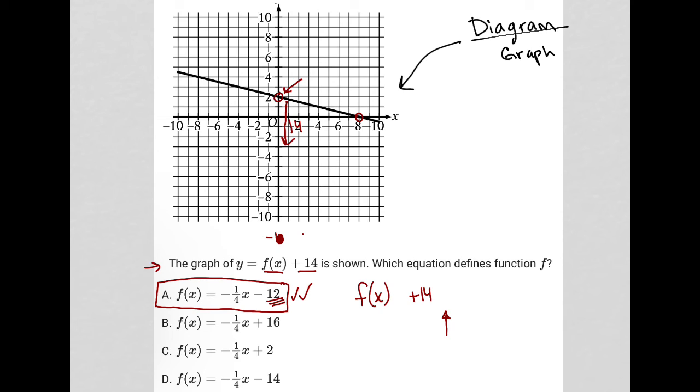Again, we take the y-intercept from where we are, which represents this equation. And since we're asking for just the f of x part, we're reversing that upward shift of 14 that this indicates. So that means we're shifting back down 14 spaces, and that would take us to a negative 12 on the y-axis.